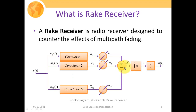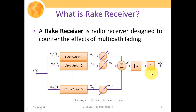After proper signal normalization, we pass the combined signal through an integrator to evaluate the signal strength, giving us Z. On the basis of Z, we determine which bit was received — whether it is 0 or 1 — depending on a threshold value. If the value of Z is greater than or equal to 0, the received symbol is determined as 1; if it is less than 0, it is evaluated as 0. This is how we recover the transmitted signal.